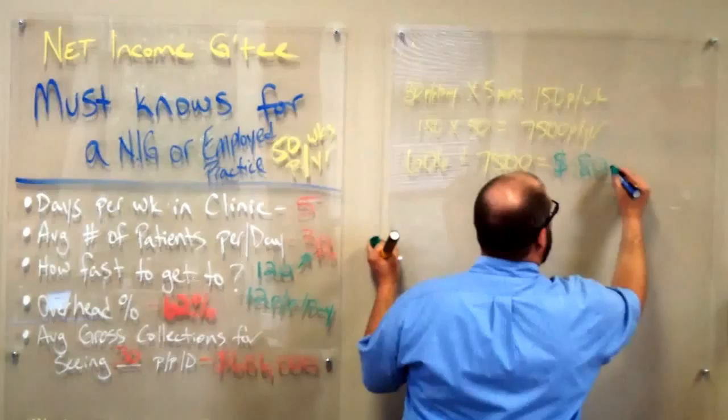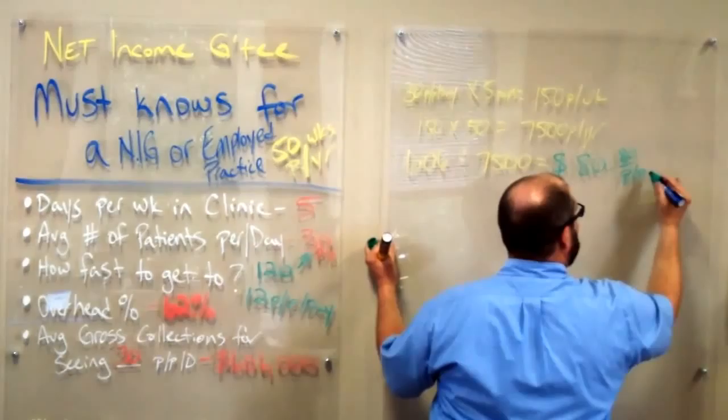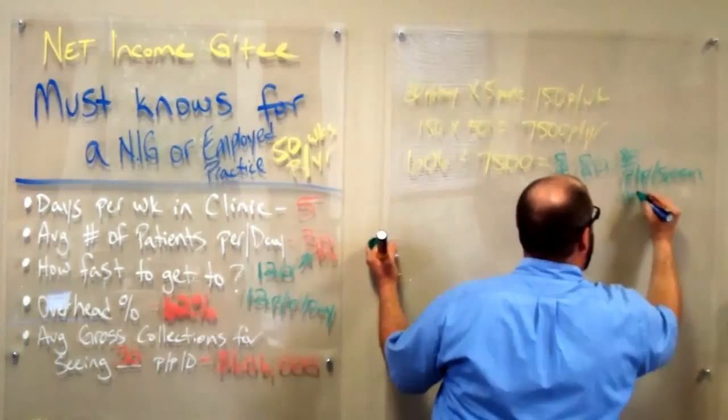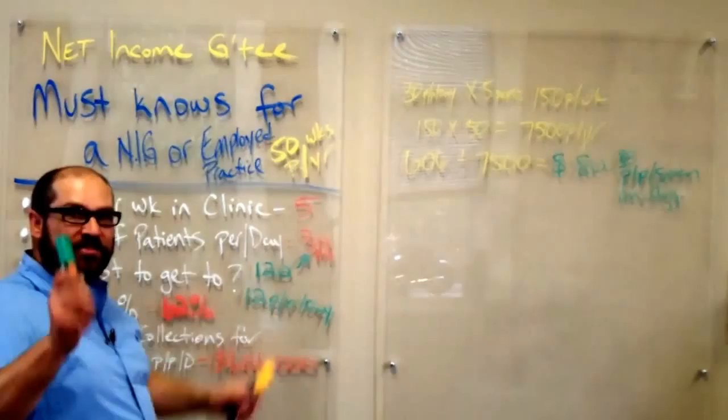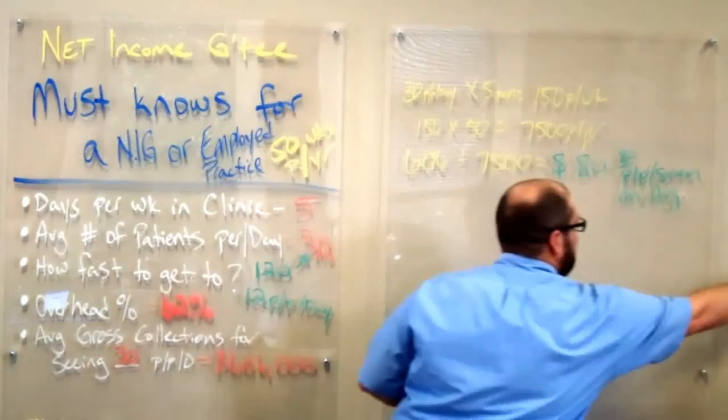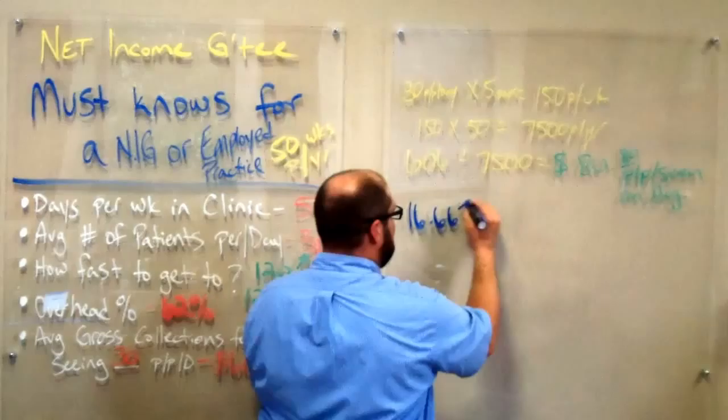Then what we do is we take 606 and divide it by 7,500. And what that gets us, I'll write this up in green, is $80.80 per patient seen on average.